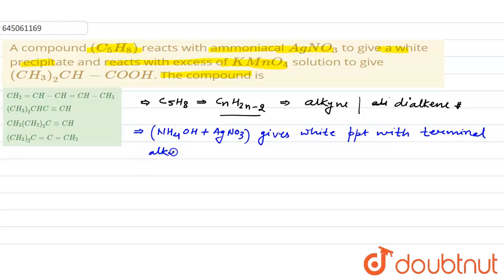Terminal alkyne - it means the given compound is terminal alkyne. Let's write down its formula: it can be CH3-CH2-CH2-C≡CH. When it is treated with ammoniacal silver nitrate, it forms white precipitate as CH3-CH2-CH2-C≡C-Ag. This is the white precipitate formed by this compound.